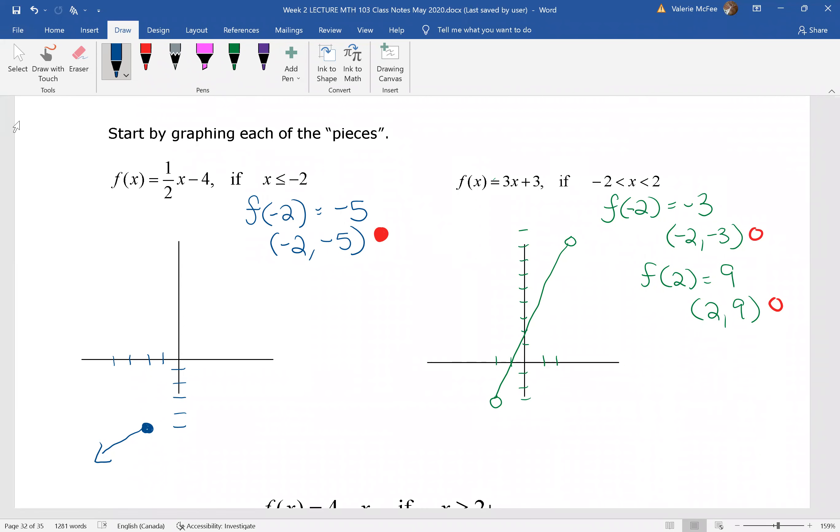All right, I hope this is what your pieces look like. Let's talk about the first one. You found the f of negative two using the negative two in the restriction that gave you the ordered pair negative two, negative five with a closed circle.